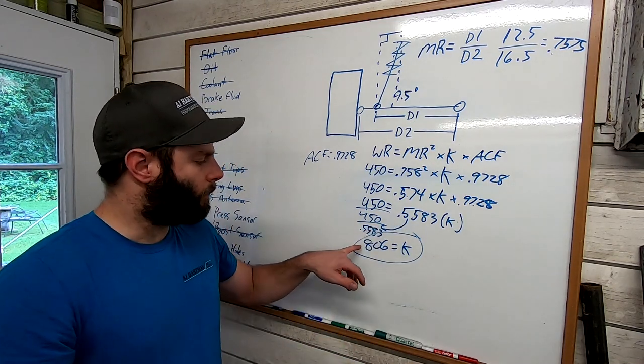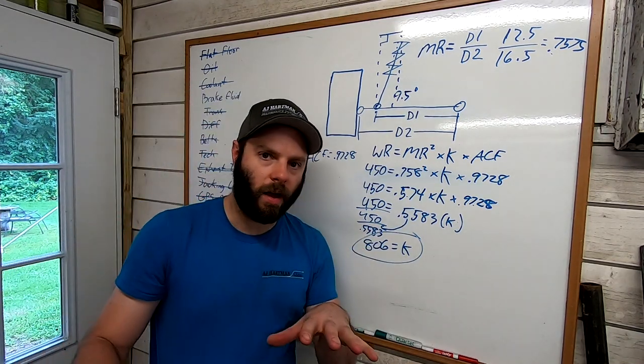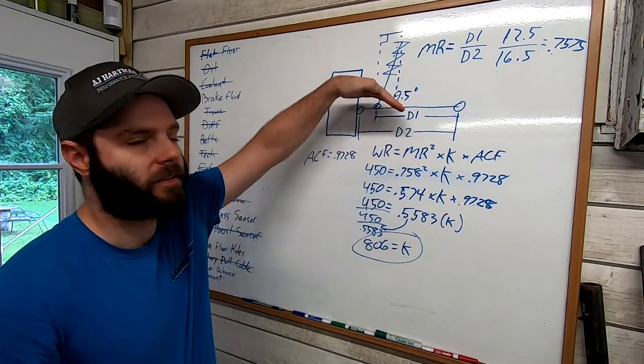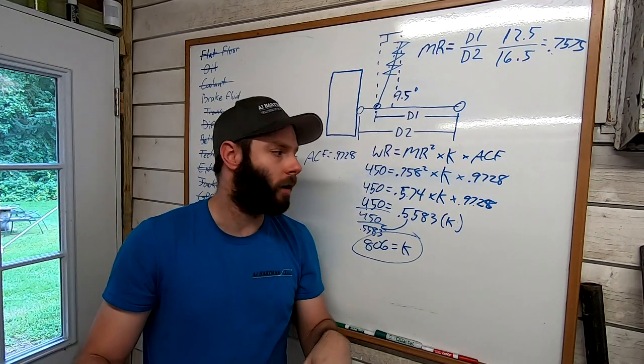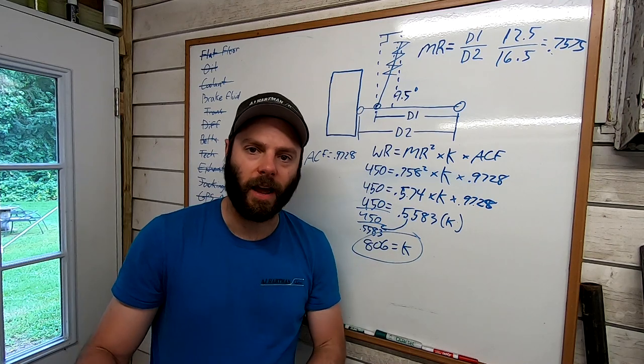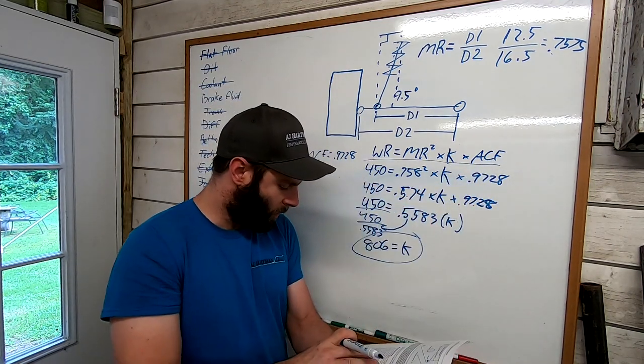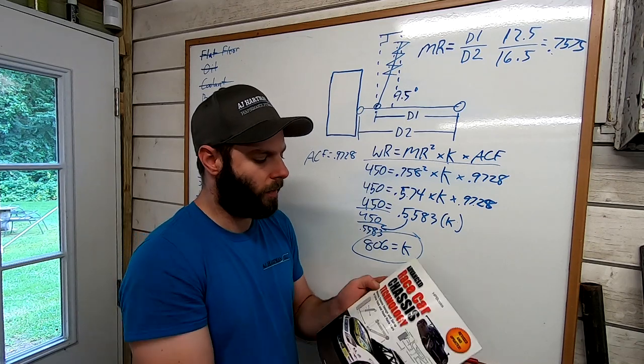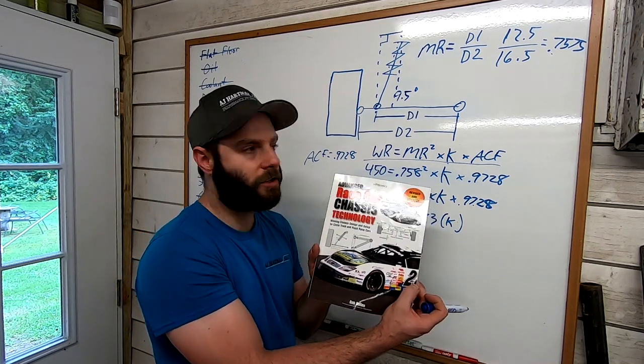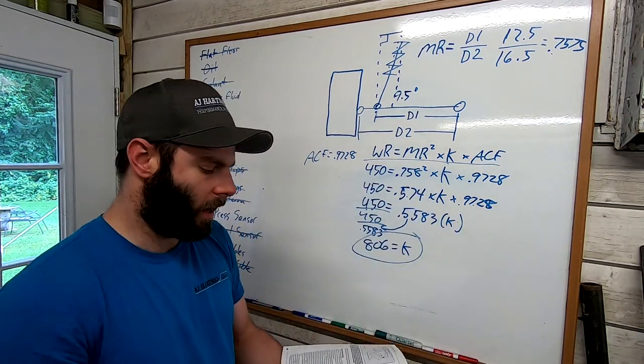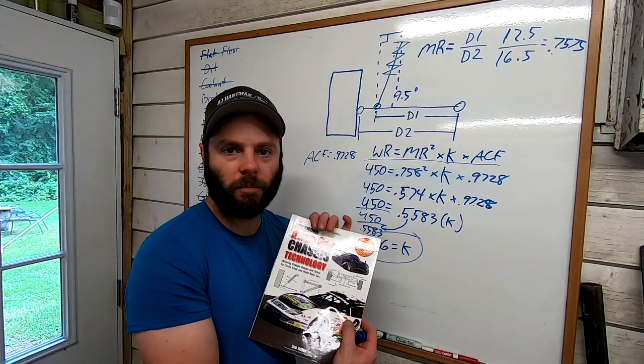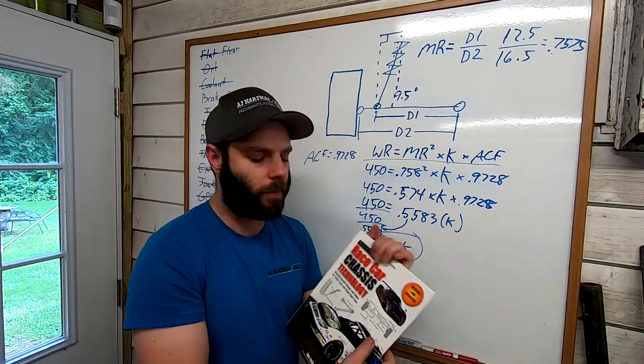So I'm going to want right around 800 pound spring rate on the IRS setup to give me a similar wheel rate to the solid axle. This equation here comes right out of page 44 of the Race Car Chassis Technology book. Again, really helpful stuff in all these books, I'll put links to all three of them in the video description below.